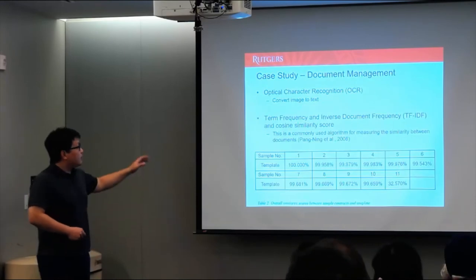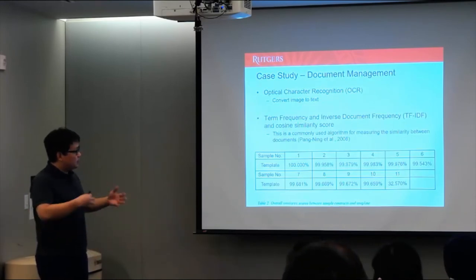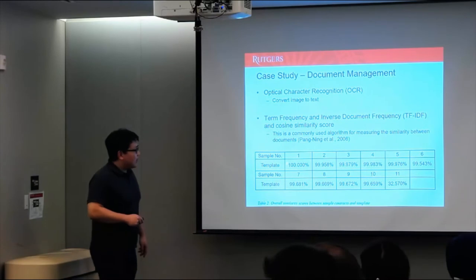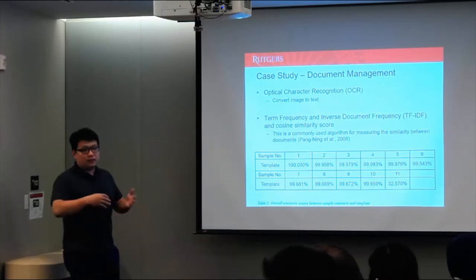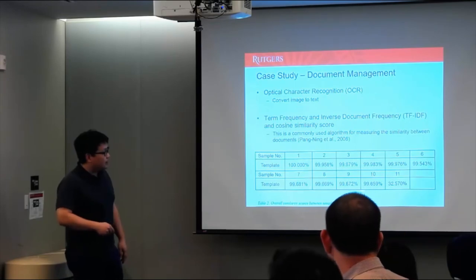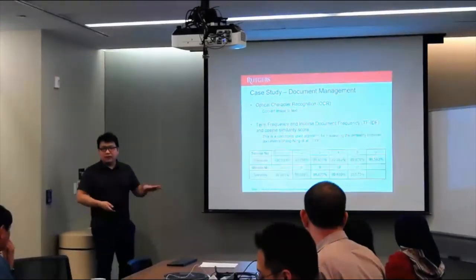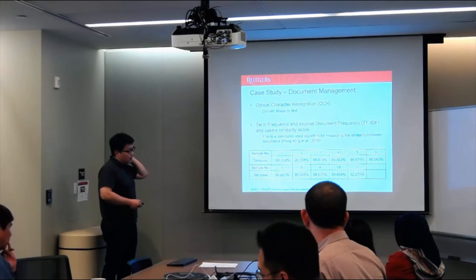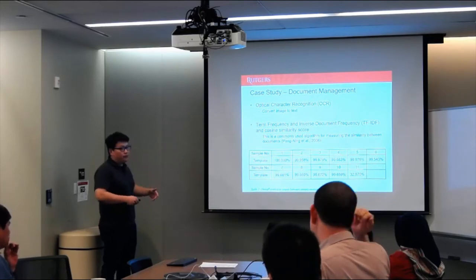And we first use OCR to convert image to text. And then we use cosine similarity score to see how each sample is similar to number one, the template. So number one itself has 100%. All other has about more than 99%. Only number 11, where we created with different template, has a very low percentage, similar percentage. So number 11 should not belong to this group of contracts.